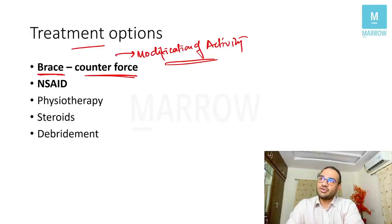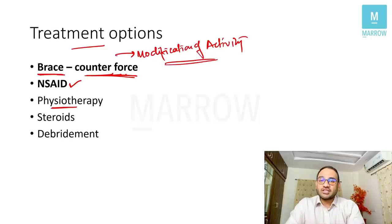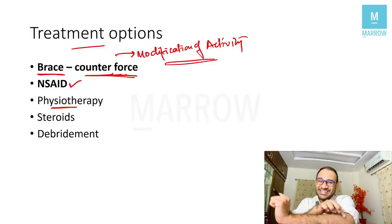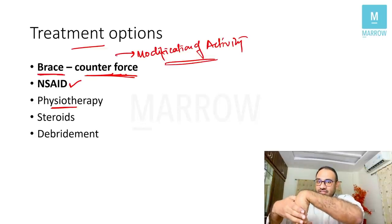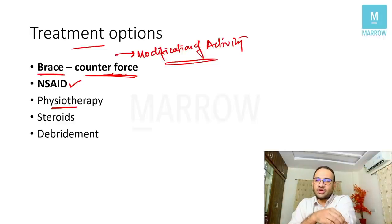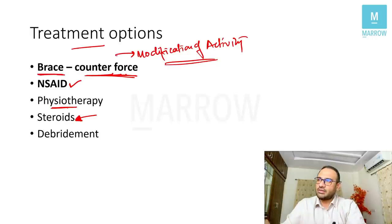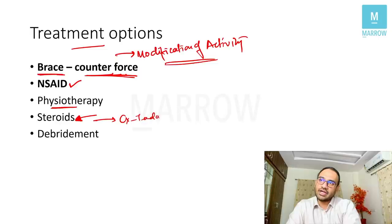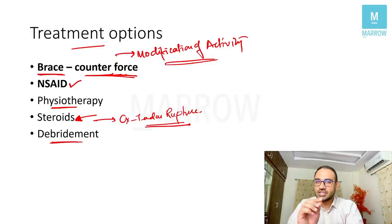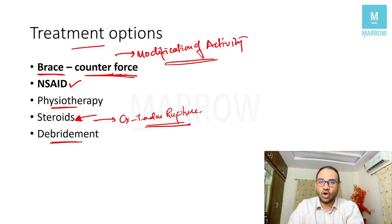Treatment options for tennis elbow include: modification of the activity causing pain, counterforce brace, NSAIDs or painkillers, and physiotherapy — asking the patient to stretch the wrist extensors by flexing the wrist. Steroid injection (long-acting methylprednisolone) can also be given, but it carries a complication of tendon rupture. The other treatment option is debridement — open or arthroscopic — where you release the affected muscles and remove necrotic or inflamed tissue to augment healing.